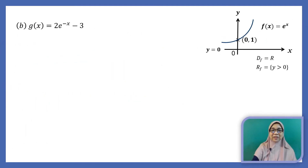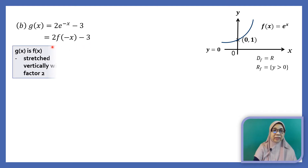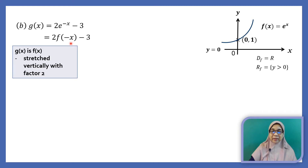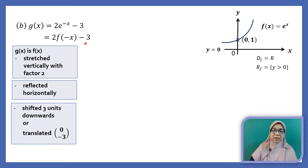The second function we are going to graph is g(x) equals 2e to the power of negative x minus 3. The relationship between g(x) and f(x) is g(x) equals 2f(negative x) minus 3. The 2 in front of f indicates we need to stretch the graph vertically with factor 2. Negative x in brackets indicates we need to reflect the graph horizontally. Negative 3 at the back indicates we need to shift the graph 3 units downwards, or carry out the translation (0, -3).